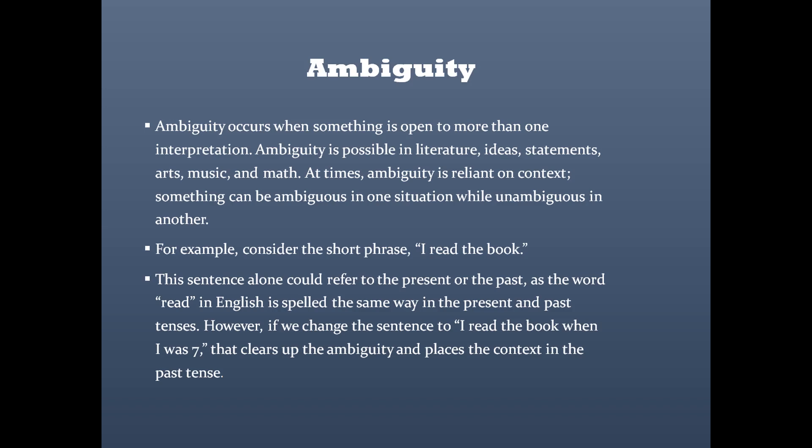An ambiguity occurs when something is open to more than one interpretation. Ambiguity is possible in literature, ideas, statements, arts, music, and maths. At times, ambiguity is reliant on context — something can be ambiguous in one situation while unambiguous in another.